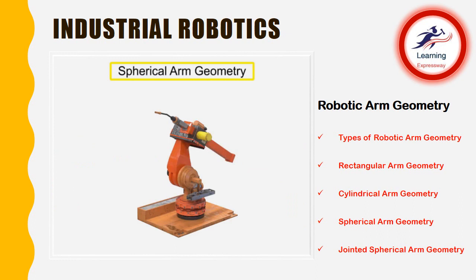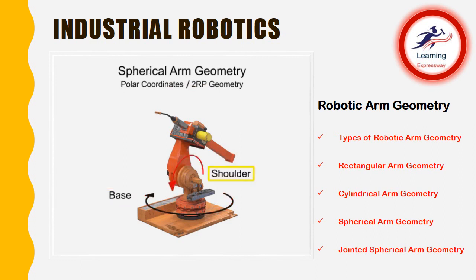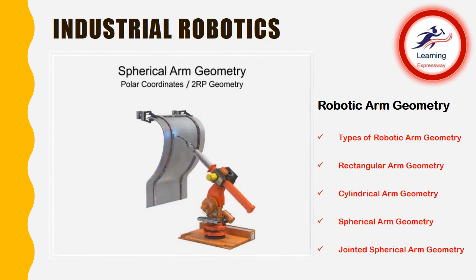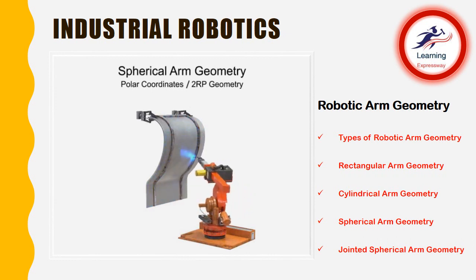Spherical arm geometry robots can rotate in two directions and move linearly in one, and are given the designation of 2RP. The robot has base rotation, shoulder rotation, and prismatic or linear motion at the arm. This type of robotic arm is most often used in machine tending, material handling, welding, painting, coating, and assembly tasks.